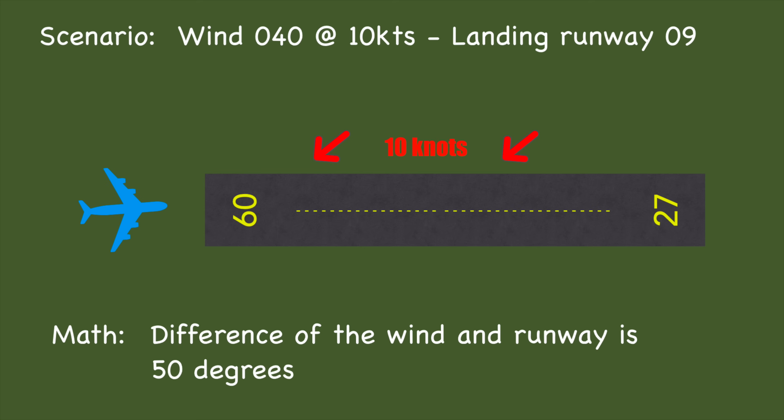The very first thing you need to do is establish the difference between the runway you're landing on and the wind direction it's coming from. I just take the bigger number and subtract the smaller number to make my life easy. So in this first scenario, you're landing runway 9, the wind is 040 — 9 minus 4 is 5 — so your difference between your wind and your runway is 50 degrees.